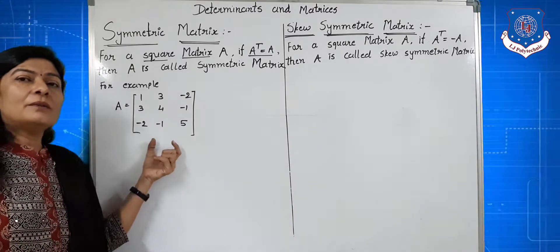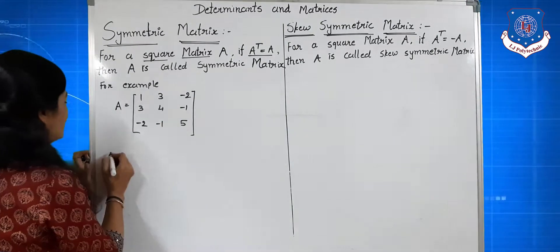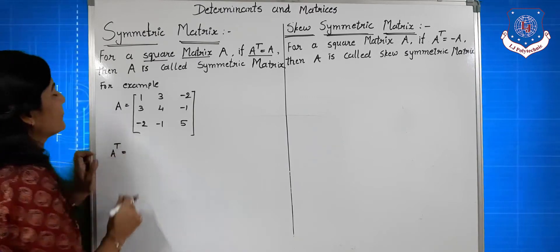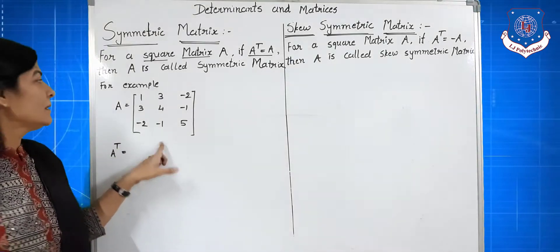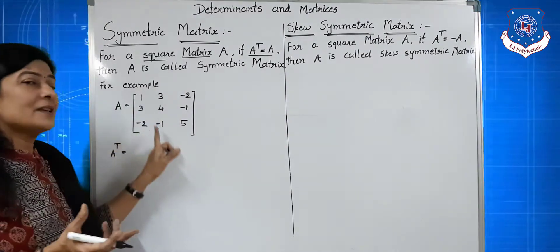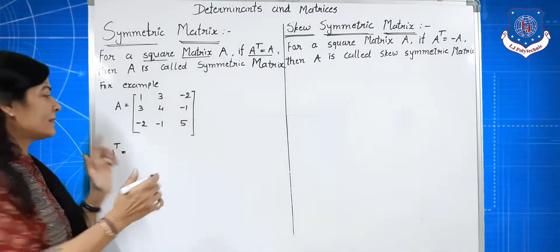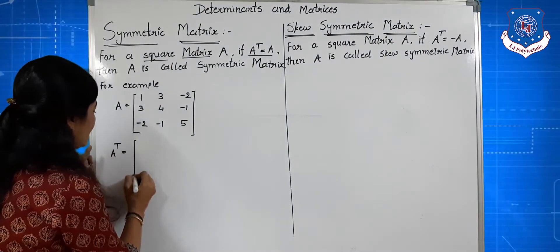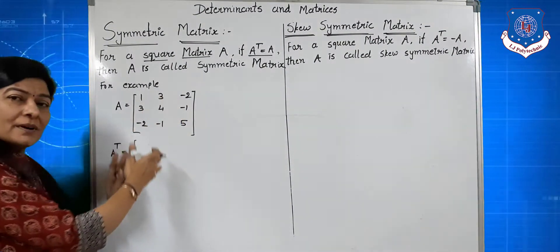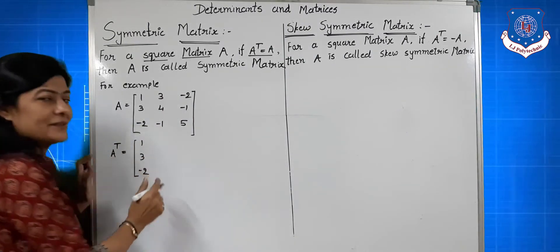Now let us find A transpose. A transpose means rows and columns are interchanged. The first row becomes the first column, so we write 1, 3, minus 2 as the first column.